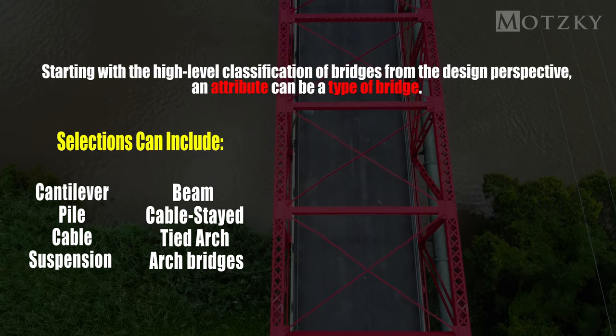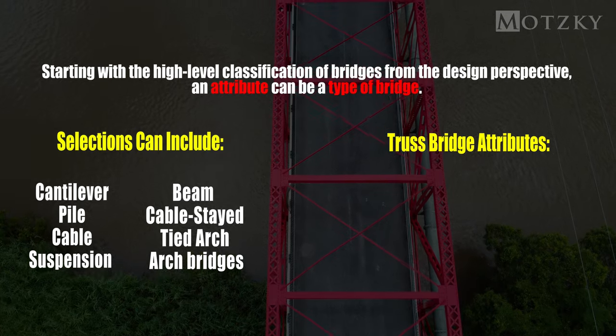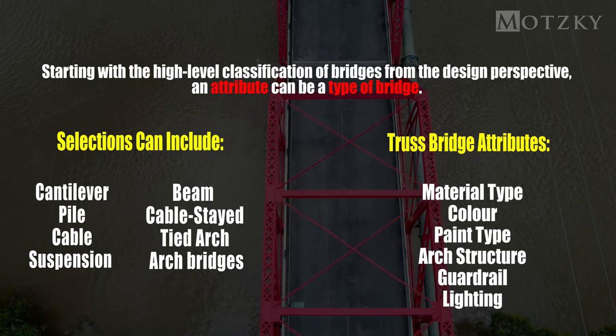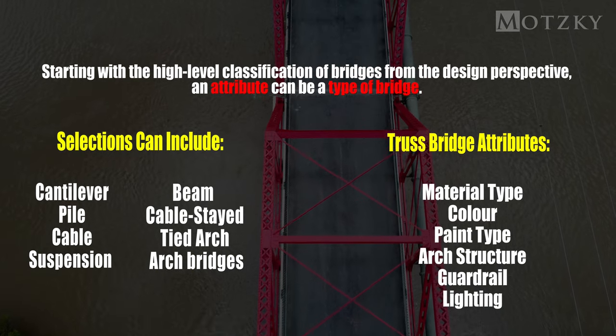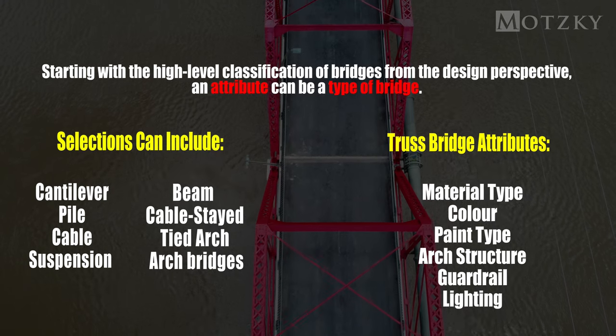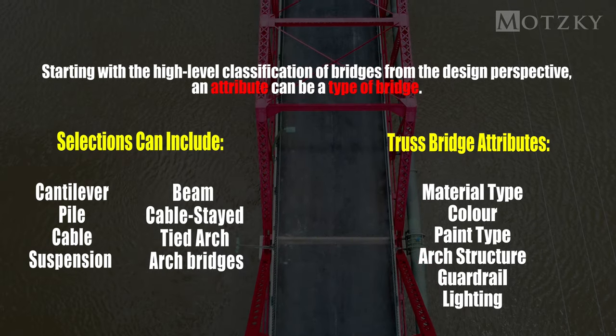Once we select the bridge type — for example, a truss bridge — another series of attributes have to be considered, such as material type, color, paint type, arch structure, guardrail, and lighting.